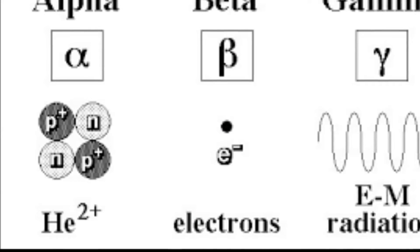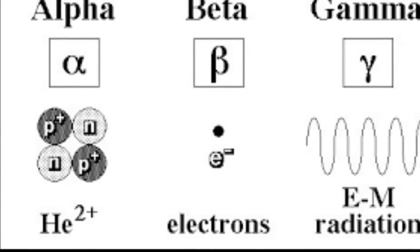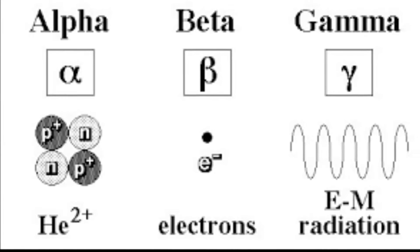Three main types of radiation are alpha, beta, and gamma. Alpha is the largest type of radiation, gamma the smallest, with beta in between.